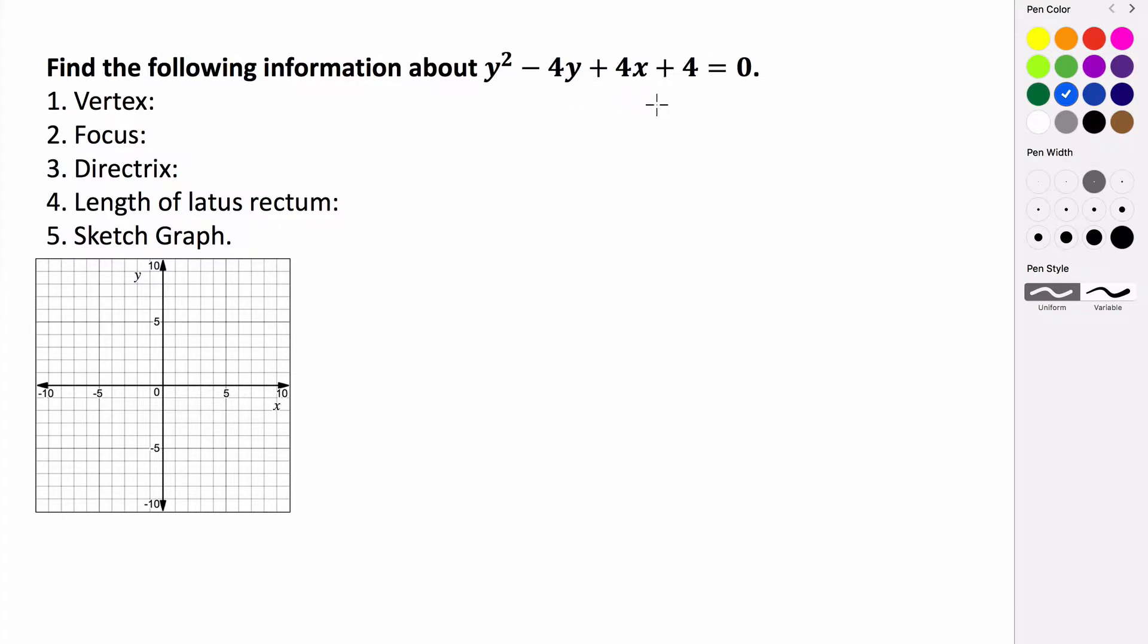And we want to try and change this form into the conic form that we're used to. So what we're going to do to help us do that is we're going to isolate our values of y and move the 4x and the 4 to the right so that we can then complete the square. Because we know that our y squared variety parabola should be a perfect square.